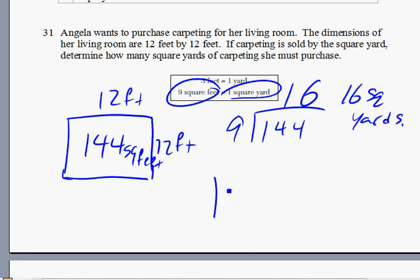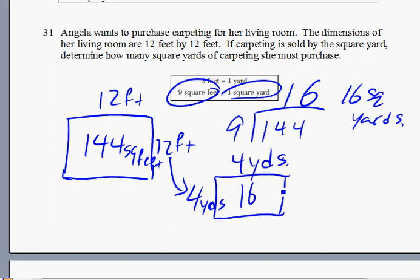Another way you can do it is actually do the conversion ahead of time. What is 12 feet in terms of yards? Well, 12 feet, 3 feet to a yard, that's 4 yards by 4 yards. And then you can multiply the 4 and 4 and get the area is 16 square yards. And you get the same answer, 16 and 16.